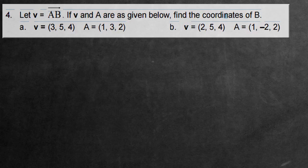Hi there, in this video I'm going to be solving the following problem involving the logic of finding the directed line segment. Let vector V equal the directed line segment from A to B. If V and A are as given below, find the coordinates of B.